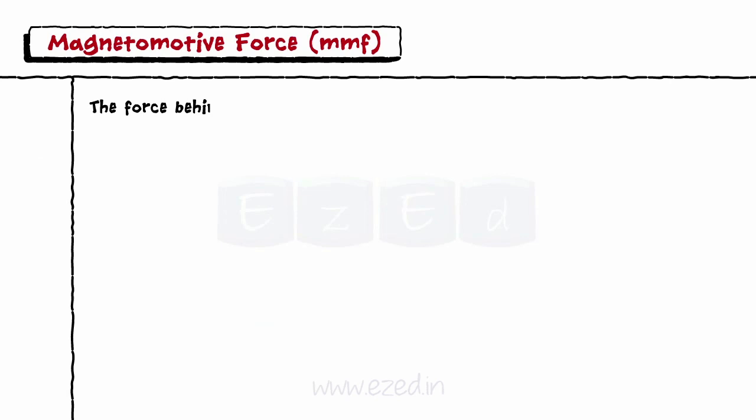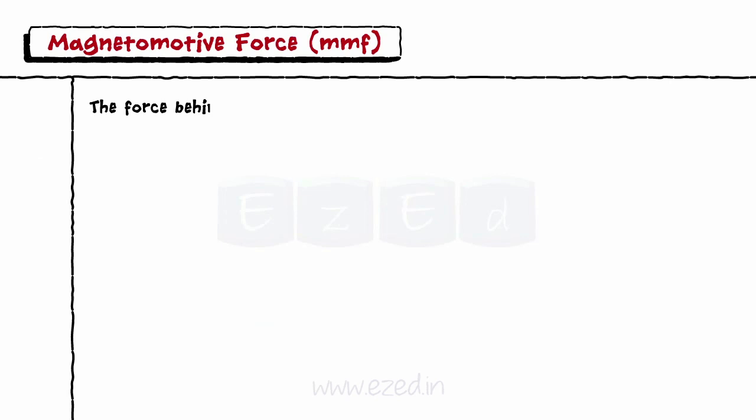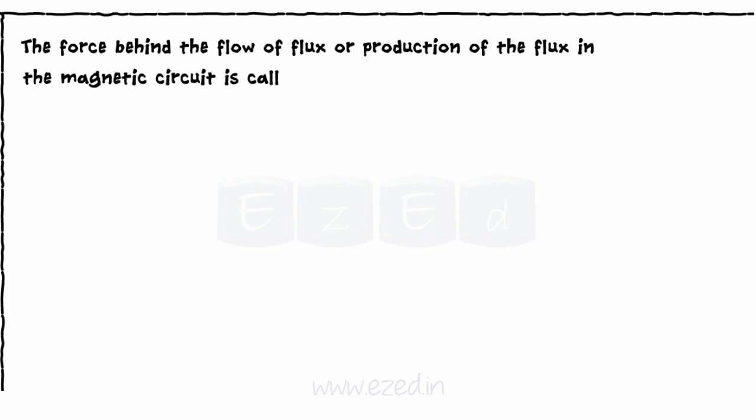The force behind the flow of flux, or production of flux in the magnetic circuit, is called as magnetomotive force. MMF determines the magnetic field strength and is given by the formula MMF equals N into I, where N equals number of turns and I equals current through the coil.